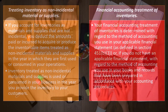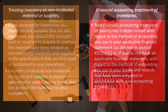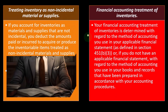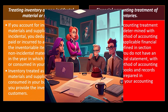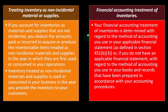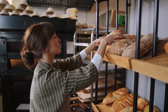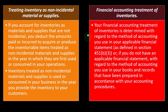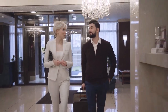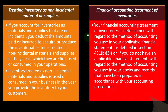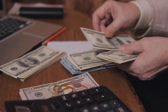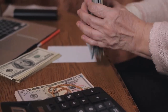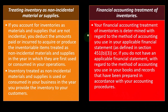Financial accounting treatment of inventories. Your financial accounting treatment of inventories is determined with regard to the method of accounting you use in your applicable financial statement. The general idea is that they want you to follow what you're doing on the books side. If you're a small business reporting on a Schedule C, you're not a publicly traded company creating financial statements required for external reporting to investors. You might not be reporting external financial statements unless you need something like a loan or financing. But generally, the bookkeeping system you're using to create your financial statements would be the system you'd use for your taxes — whether accrual method, cash method, or a combination.